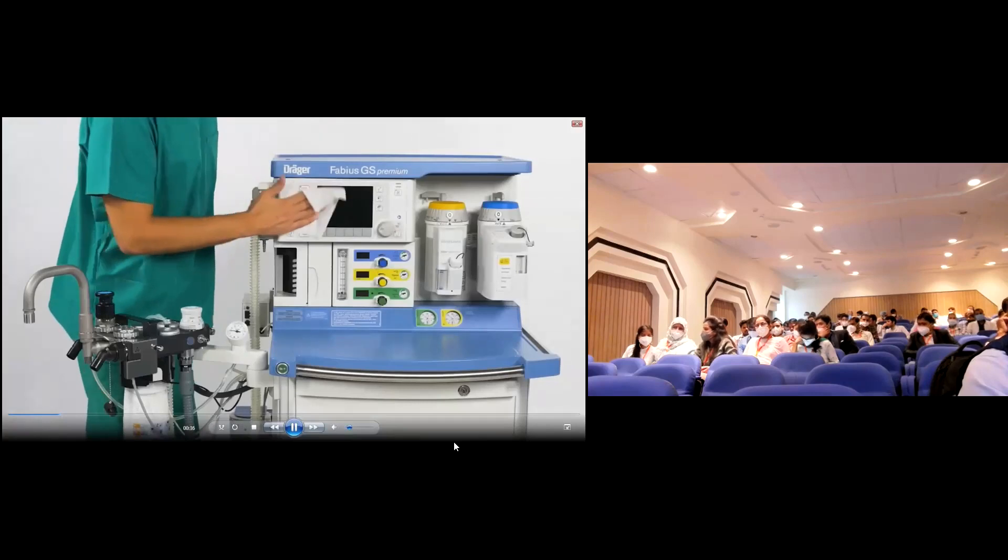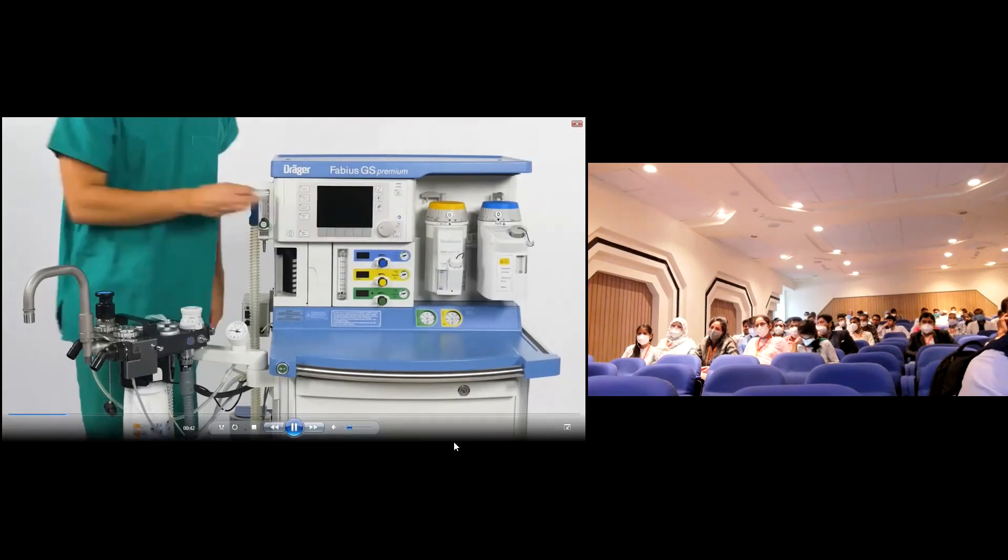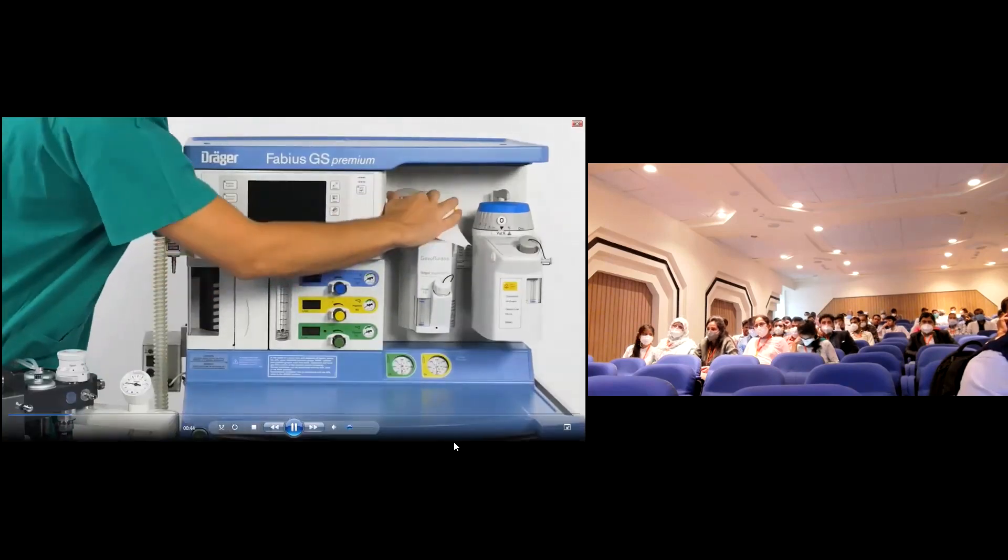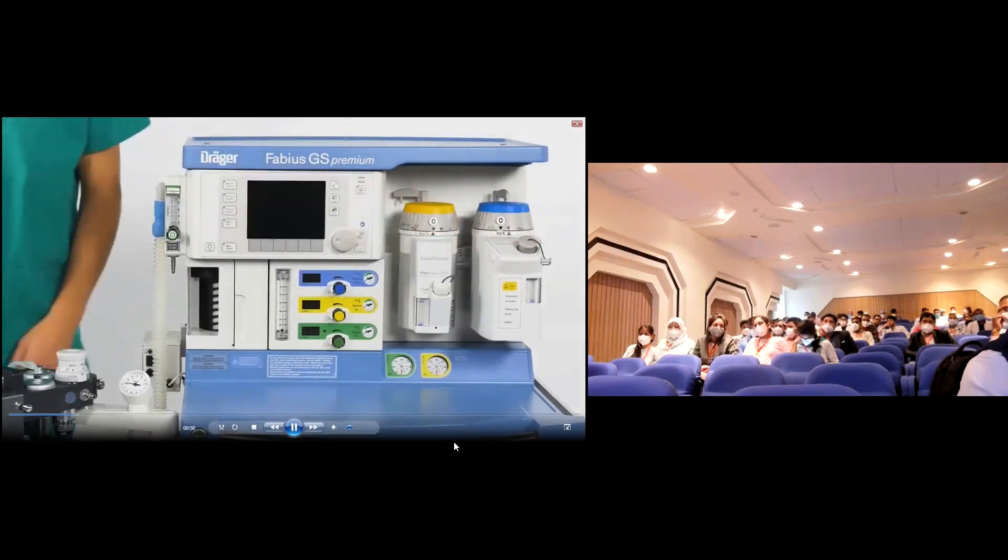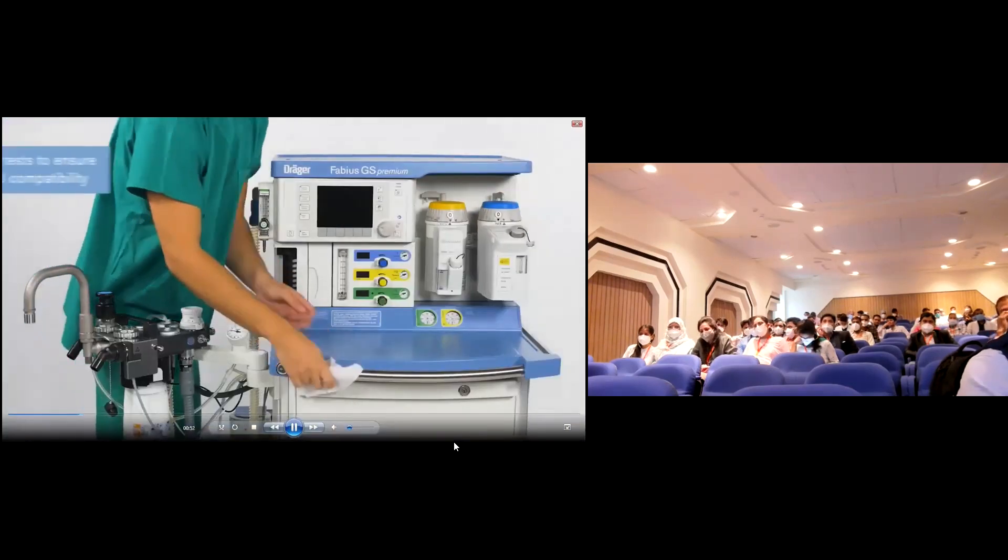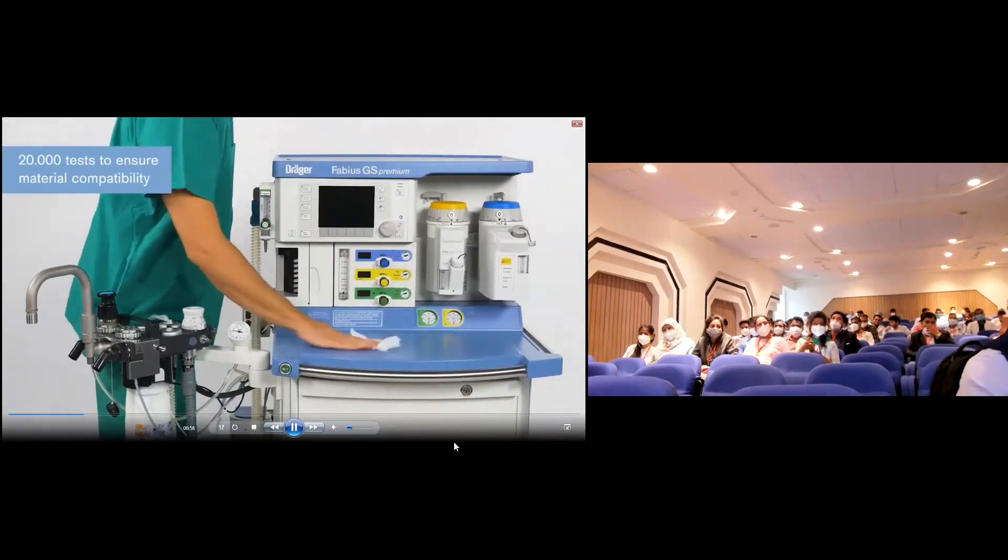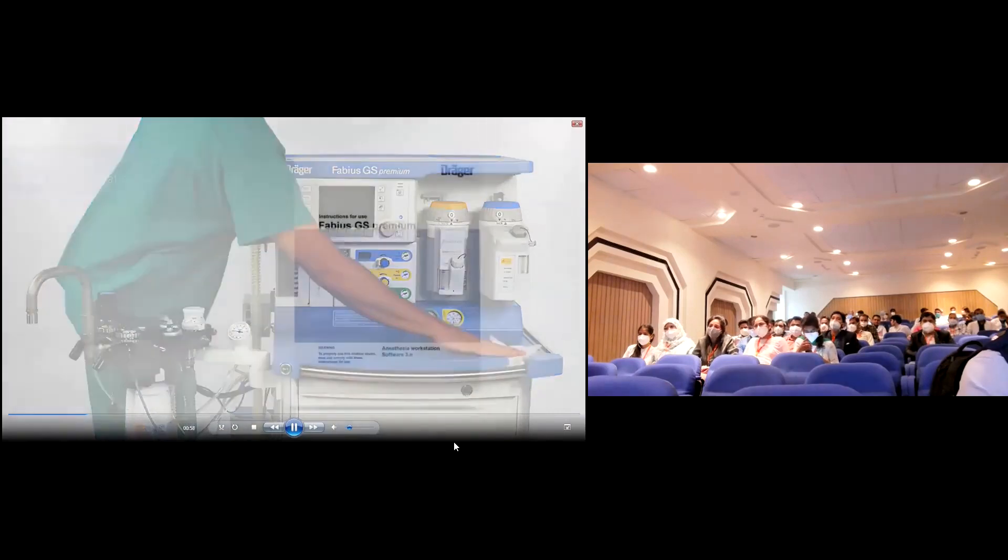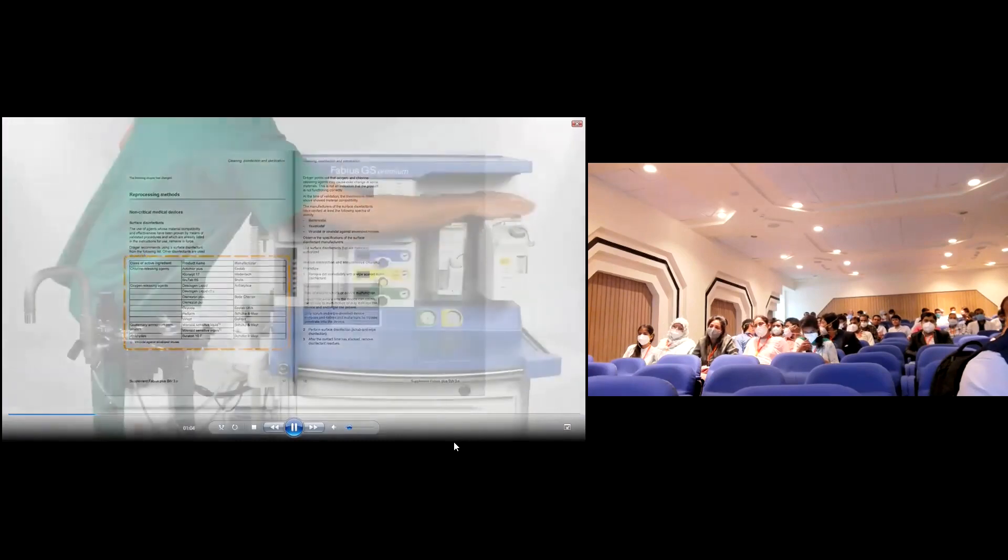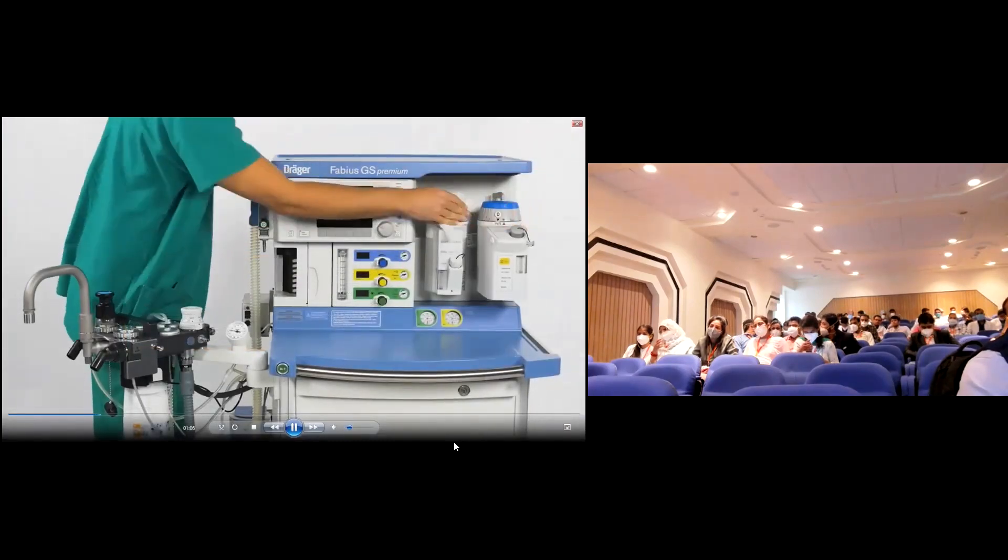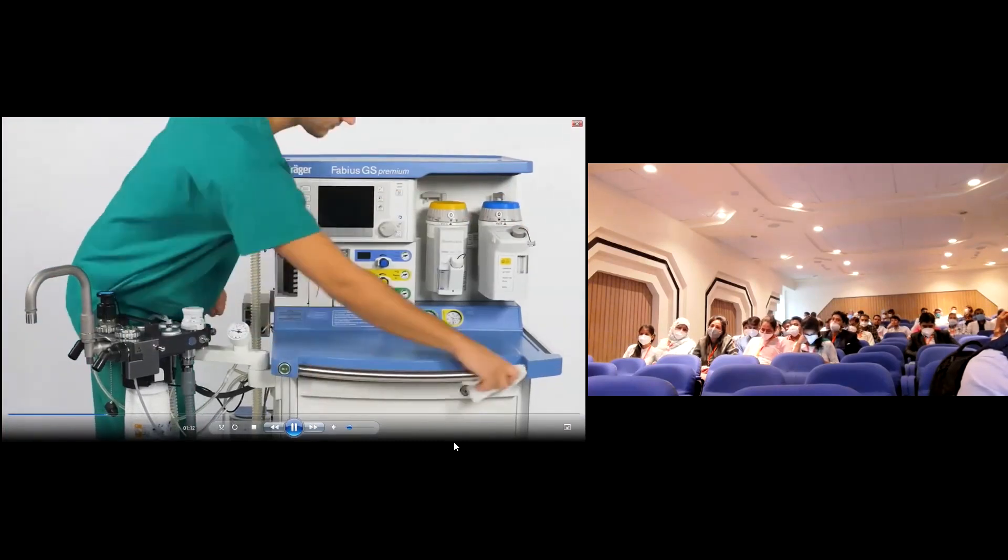We start by cleaning and disinfecting the surfaces of Fabius GS Premium which are frequently interacted with. First, remove all visible residue from the surfaces of the device. This is followed by disinfection. As there is a wide range of germicides available, we've conducted over 20,000 tests to ensure compatibility of the materials used in our products. The instructions for use of Fabius GS Premium includes a list of validated agents.